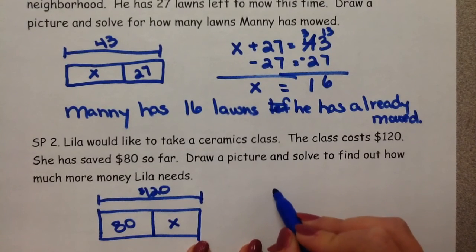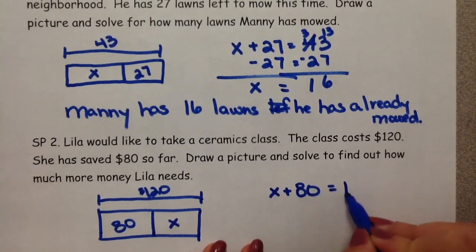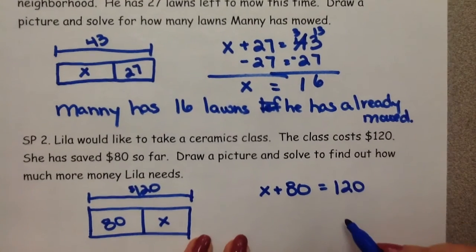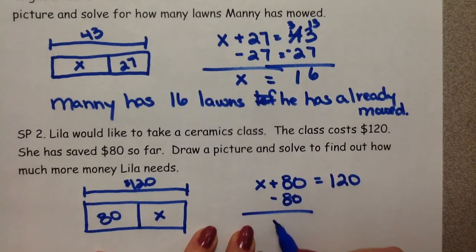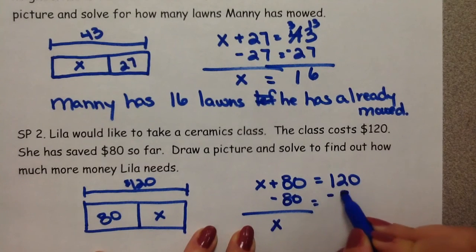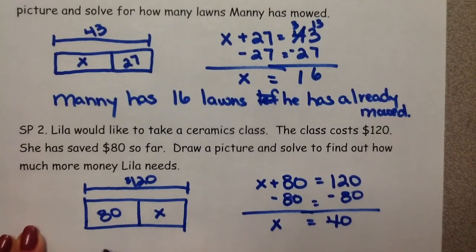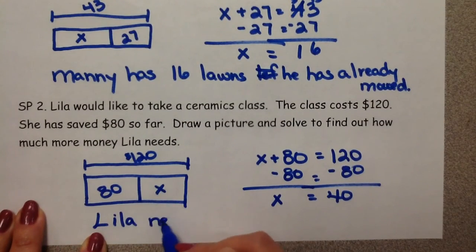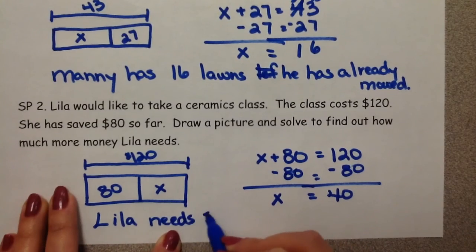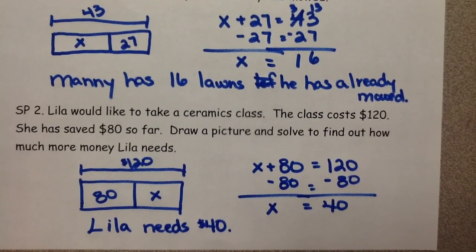So, we could write this out as x plus 80 would get us to our total of 120. Get the variable by itself by following through the inverse operation. Property of equality says we'd need to do it to both sides. So, Lila needs $40. I hope this helps. And if you have any questions, please don't hesitate to ask. Thank you.